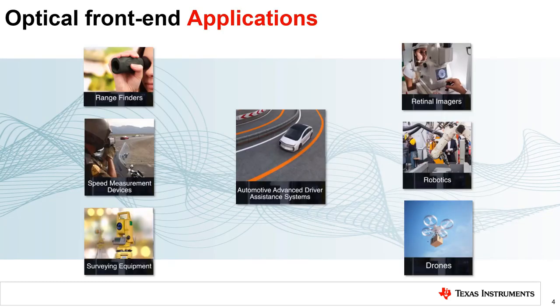Typically, transimpedance applications are featured in a wide range of optical front-end designs, such as in LIDAR, time of flight, surveying equipment, speed measurement devices, optical time domain reflectometry, and spectroscopy. All of these applications include a current output of a photodiode or other types of sensors that would need to be processed to a voltage signal by a TIA.